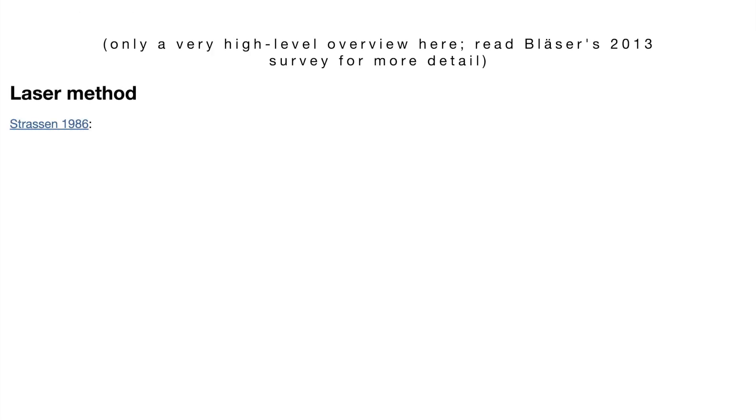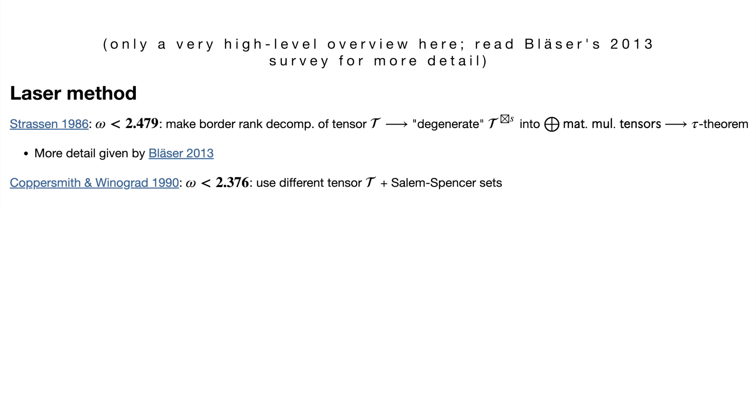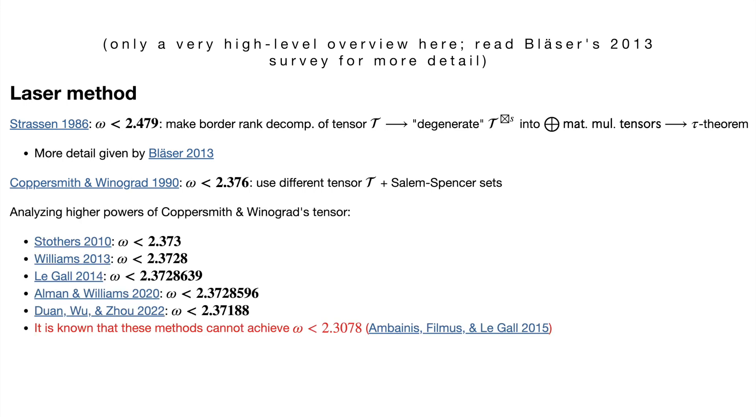In 1986, Strassen came back, this time with what he called the laser method, and this is the current state of the art. He showed that the tensor you decompose doesn't even need to represent disjoint matrix multiplications. Instead, you pick some certain tensor and show that a high enough power of it can be degenerated into a disjoint sum of matrix multiplication tensors. He achieved a runtime exponent of 2.479. Then Coppersmith and Winograd improved this to 2.376, and since then, the matrix multiplication exponent has barely improved.